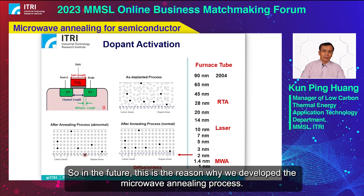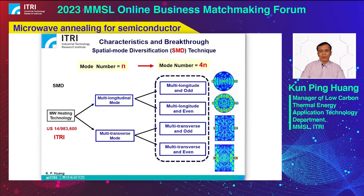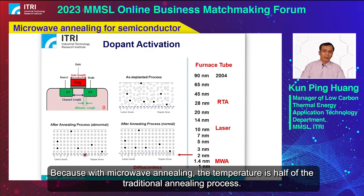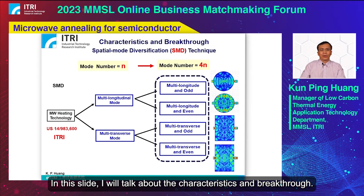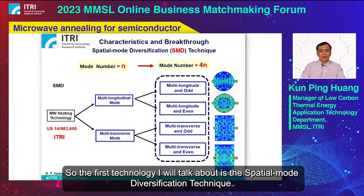This is why we developed a microwave annealing process — the microwave annealing temperature is almost half that of a traditional annealing process. In this slide, I will talk about the characteristics and breakthroughs. The first technology I will discuss is the spatial mode diversification technique.